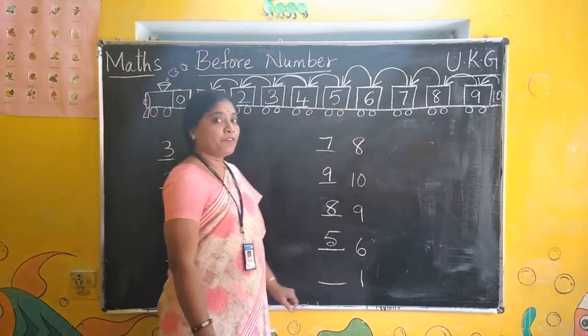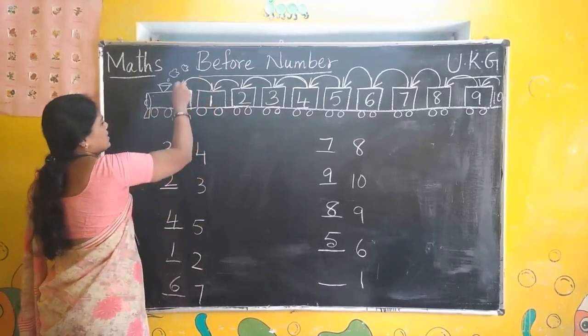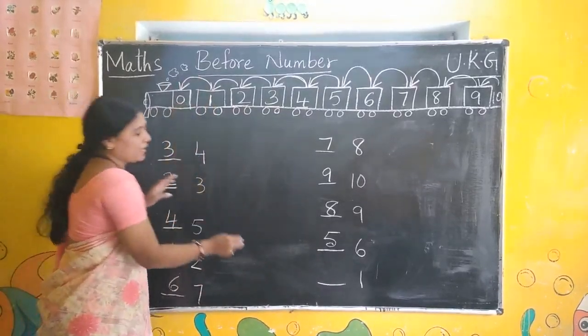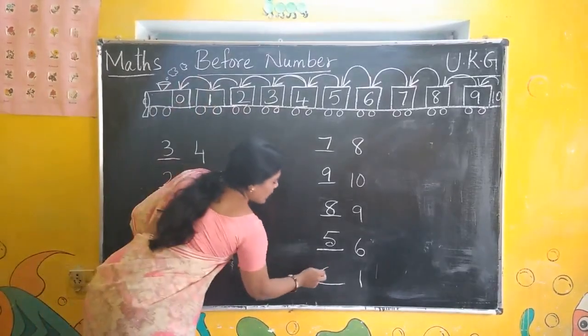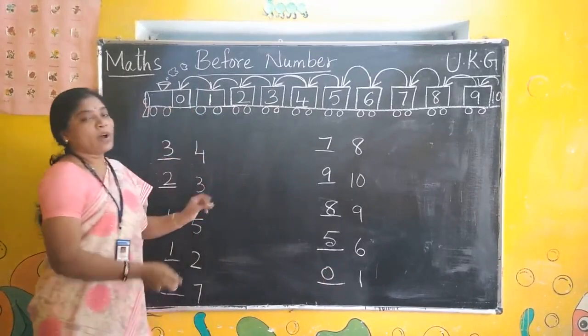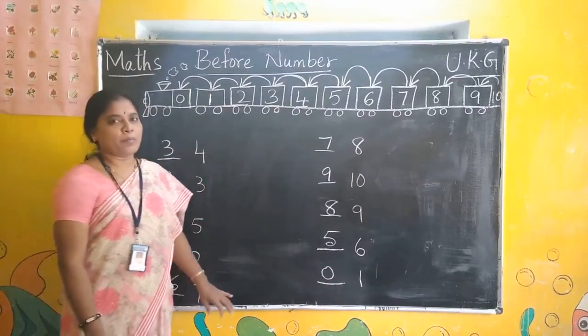Before 1, which number comes? 0. So, 0, 1. Like that, you have to write before numbers.